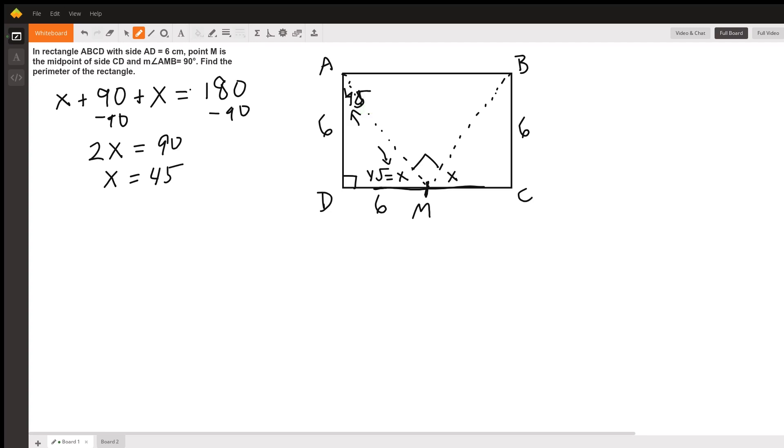And we know the same thing on this other side. This is also 6. So DC in total is now 12, 6 plus 6, which means that AB is also 12.